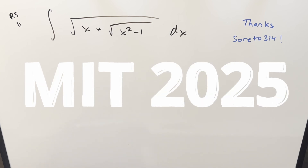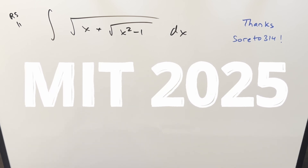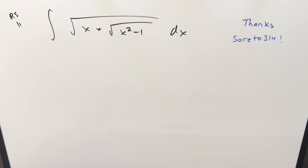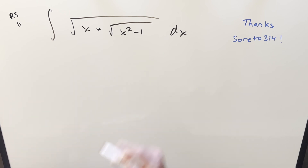We have here another interesting integral from the MIT Integration v2025, regular season 11. We've got the integral of square root of x plus square root of x squared minus 1 dx. I got an interesting suggestion in the comments from Sereto314 that we could do a trig substitution on this.